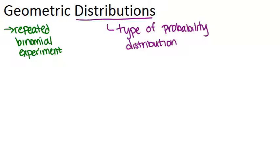The geometric distribution has to do with answering a certain type of question. The question is: what's the probability that it will take a given number of trials before the first success happens?